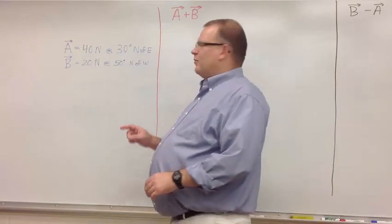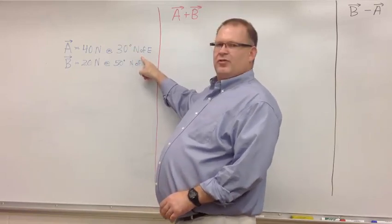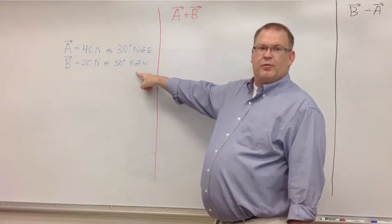I have vector A and vector B. Vector A is 40 newtons at 30 degrees north of east. Vector B is 20 newtons at 50 degrees north of west.